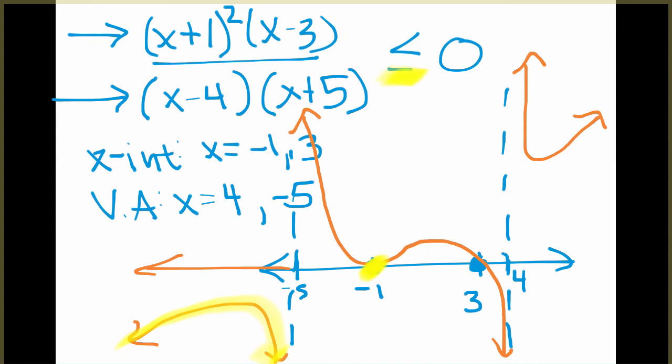It can equal 0, so I'm going to have to include this point at negative 1. And then I continue tracing. I include this point at 3. And it goes below until we get to 4. And then the rest is above. So there are three main sections to look at here where it is less than or equal to 0.